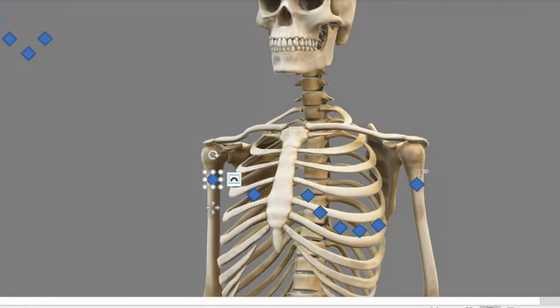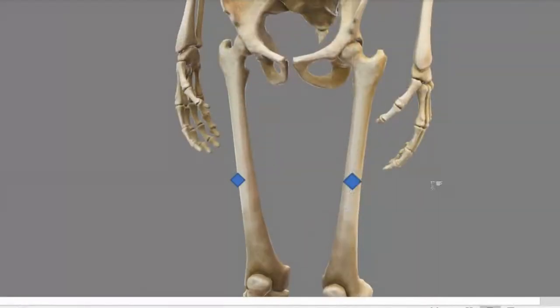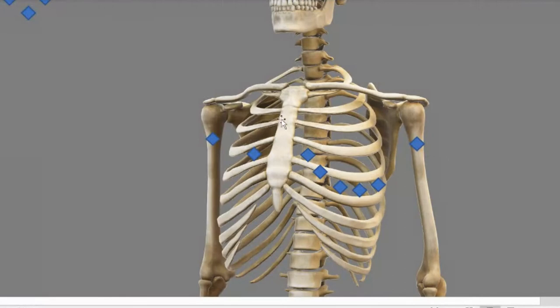You have your right arm lead, you have your left arm lead, and then you come down here to your right leg lead, and your left leg lead. 10 electrodes total.